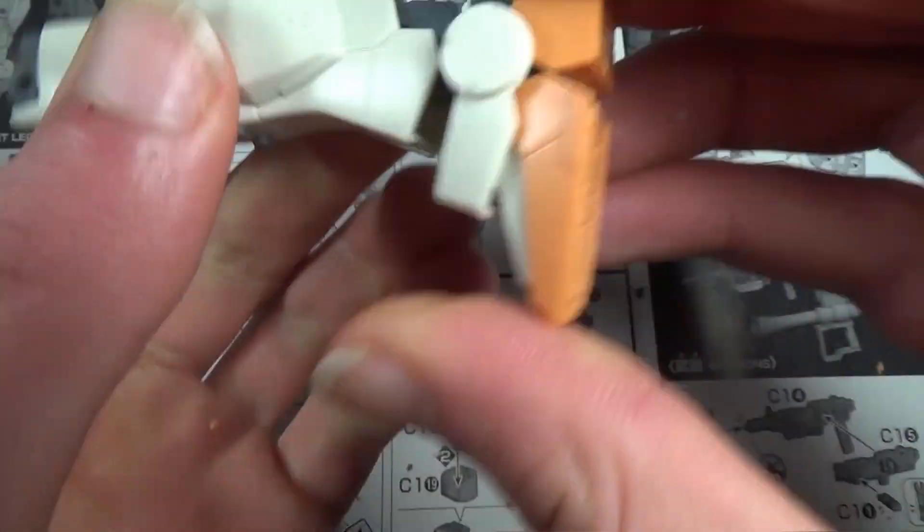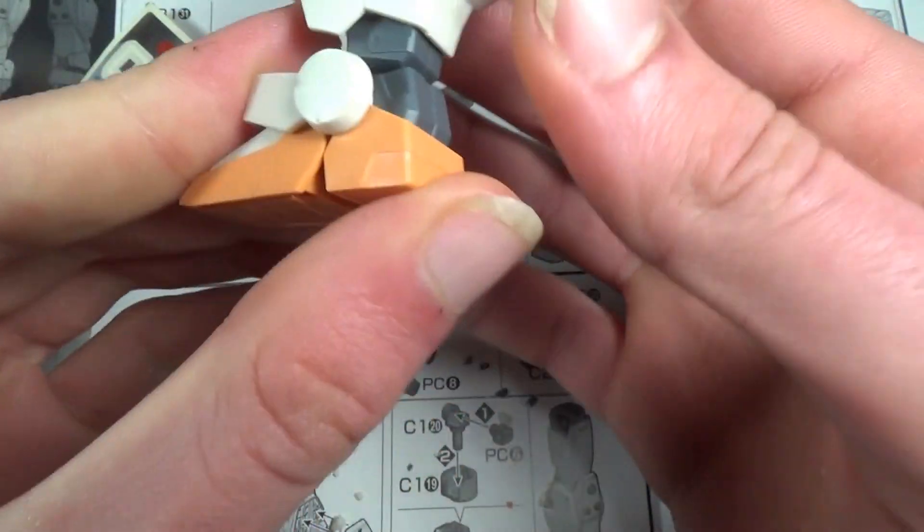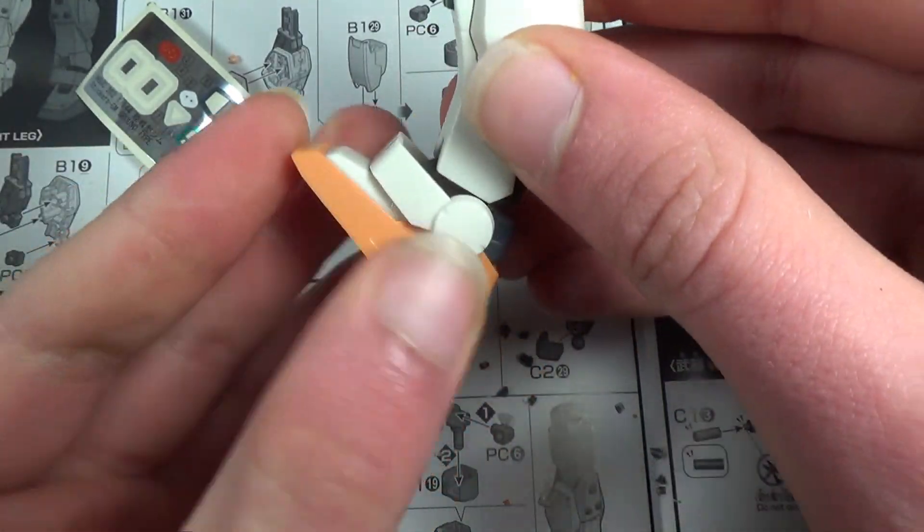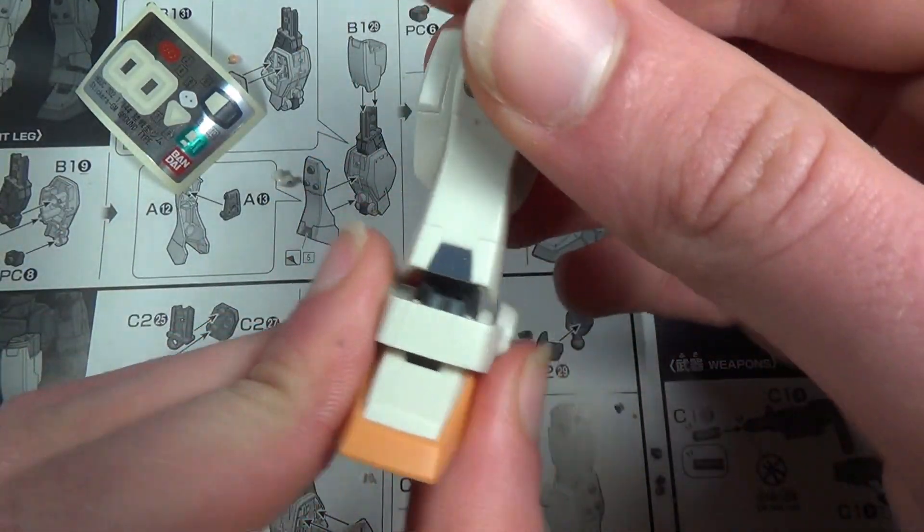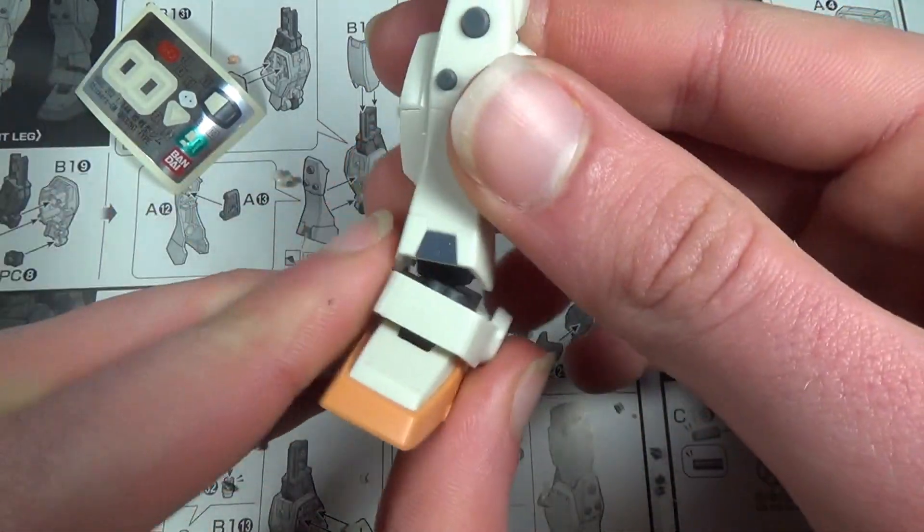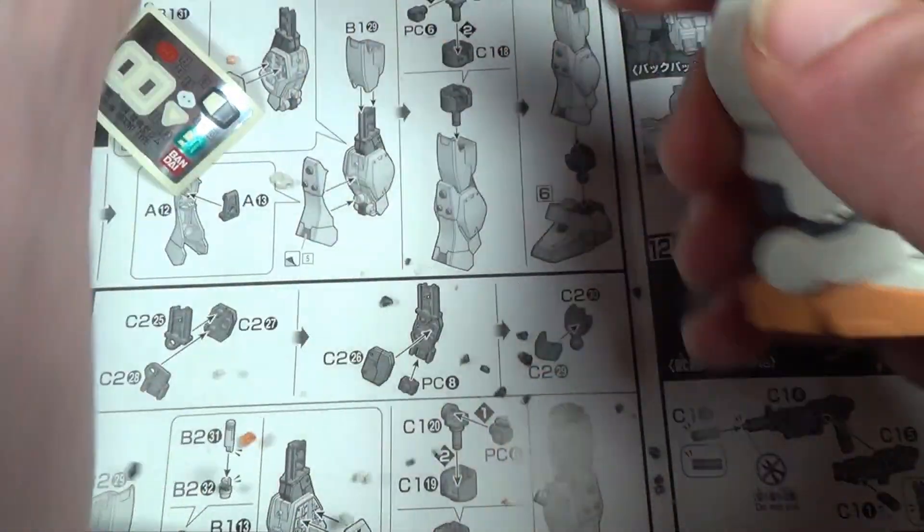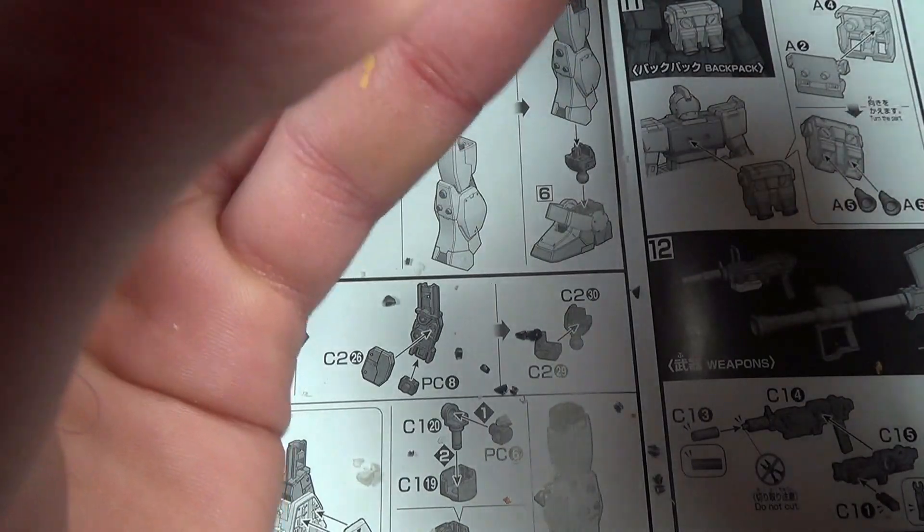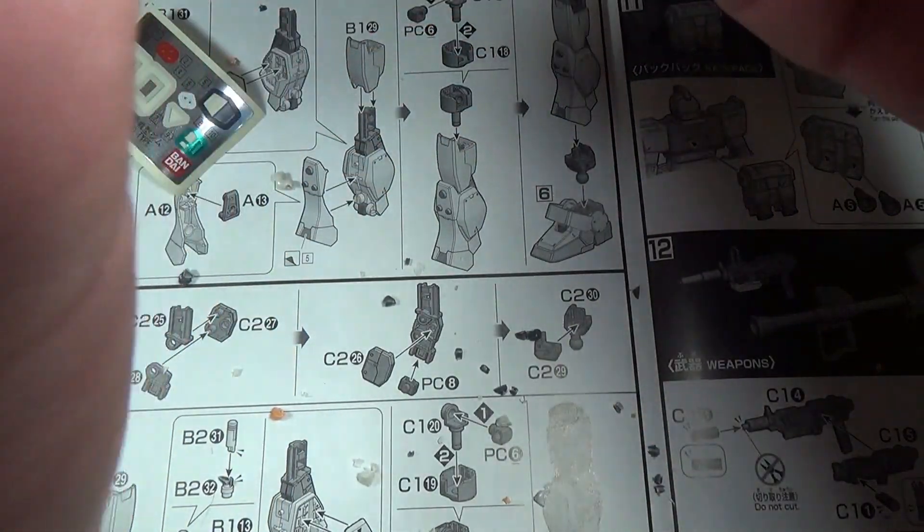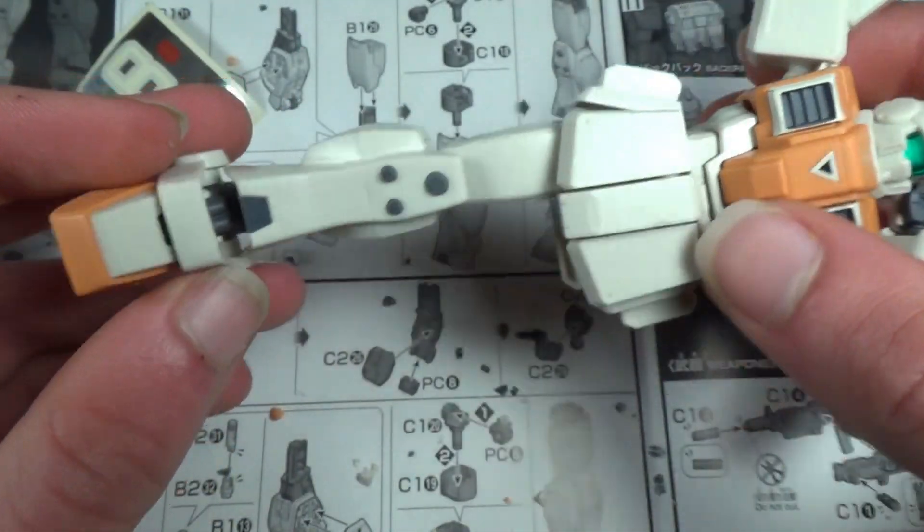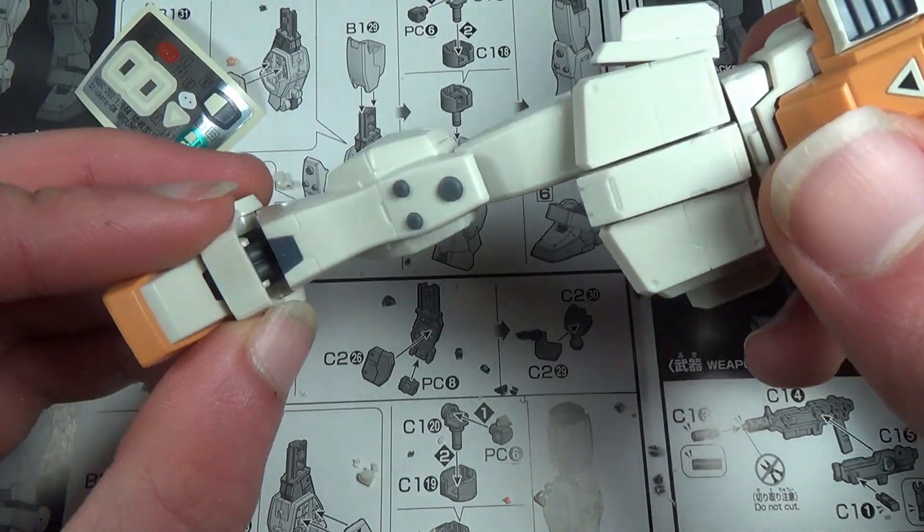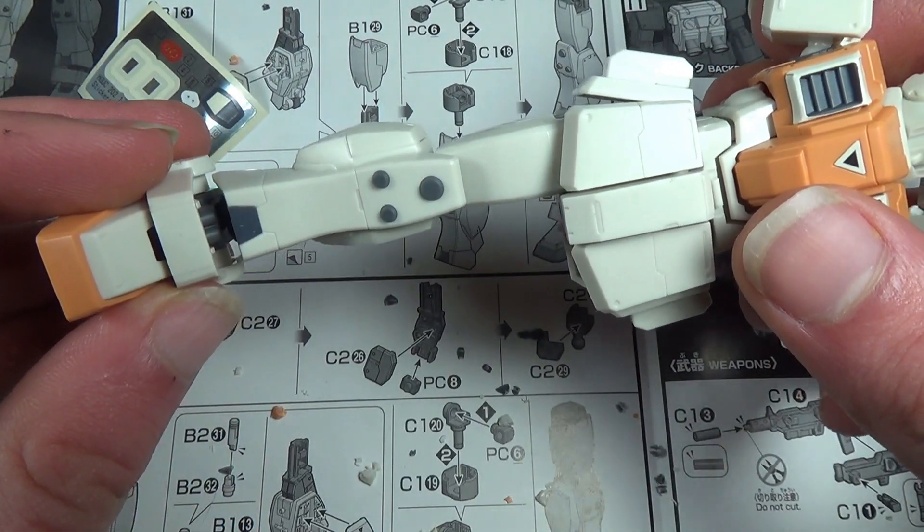And now we're just going to plug the ankle into the leg, just like that. And I believe that is the entire leg for the Ground GM, and he's got actually pretty okay ankle movement. I mean, obviously there's not a lot of side-to-side. Unfortunately, that seems to be the case for most Gunpla I've found. But if we take Mr. Ground GM here, and we pop on his leg, he's looking pretty good. So I'm going to go ahead and build the other leg, and then when I come back we are going to work on the weapons.